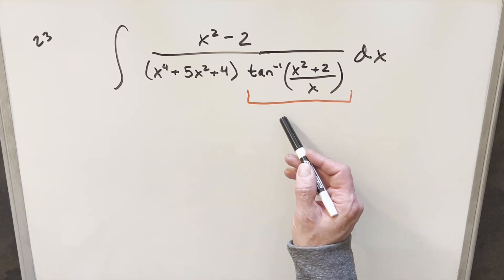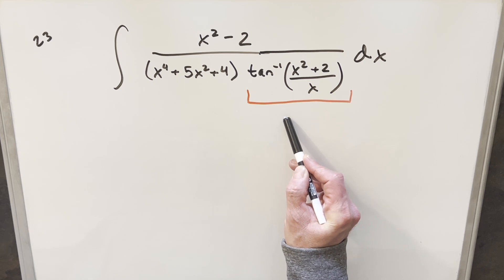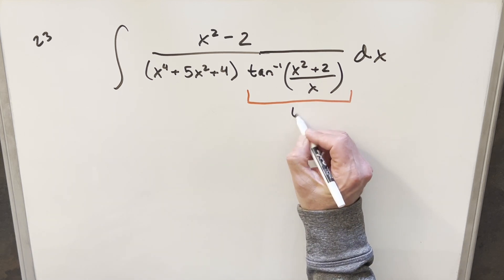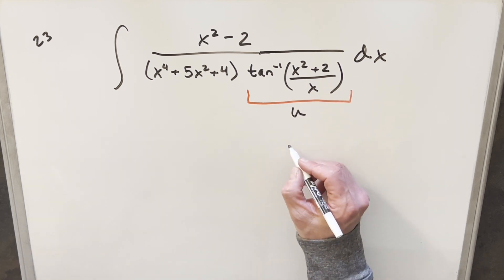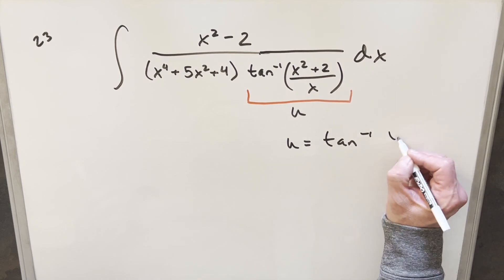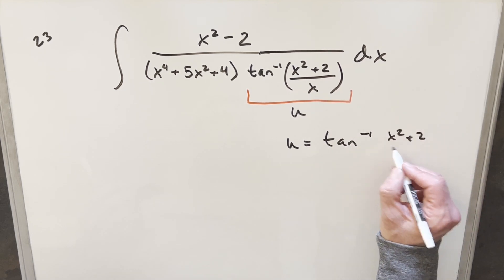But I was thinking because the arctan is in the denominator, the integration by parts looks really tricky. We still have to integrate this. So it looks like a lot of work if we try integration by parts. So what I want to do is a u substitution. I just want to make my substitution for all this and see what happens. So we'll have u equal to arctan x squared plus 2 over x.